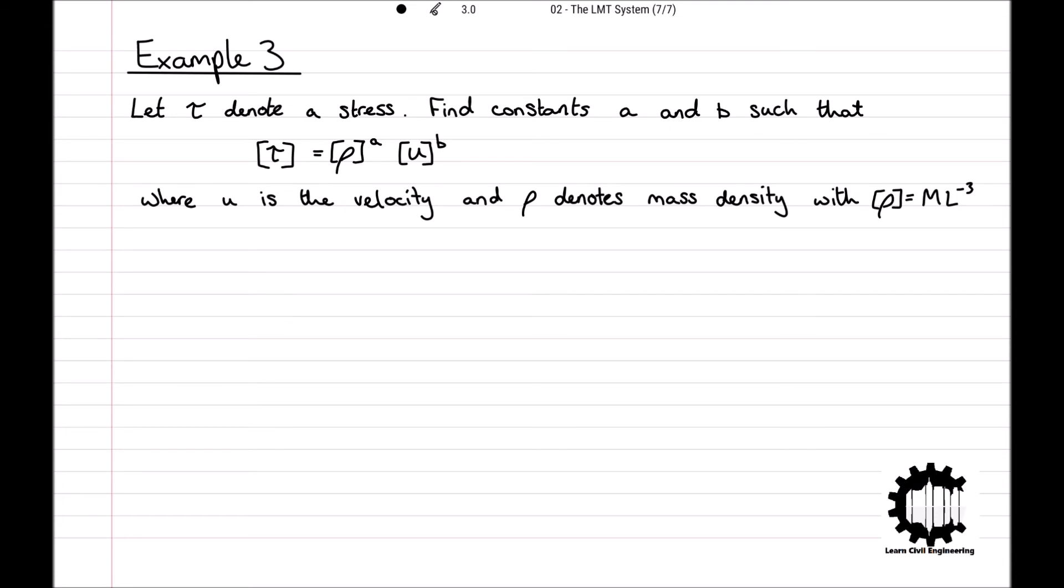Now that you've had a chance to attempt this, let's work through it together. In terms of LMT, we know that the dimensions for tau equals M times by L to the power of minus 1 times by T to the power of minus 2.